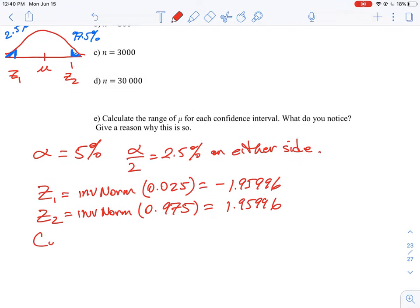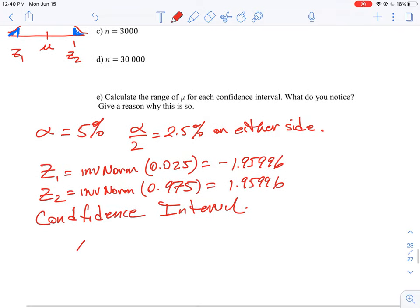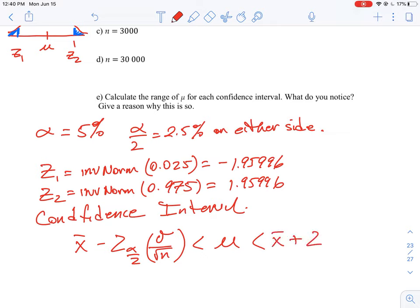In the first one here, the confidence interval is going to be given by our formula, which is going to be x-bar minus the z-score of the halfway interval times the standard deviation over the square root of n. So that's going to be one of our lower limits, and then the other side is going to be just the positive version of that. So that's x-bar plus z-score times sigma over square root of n.